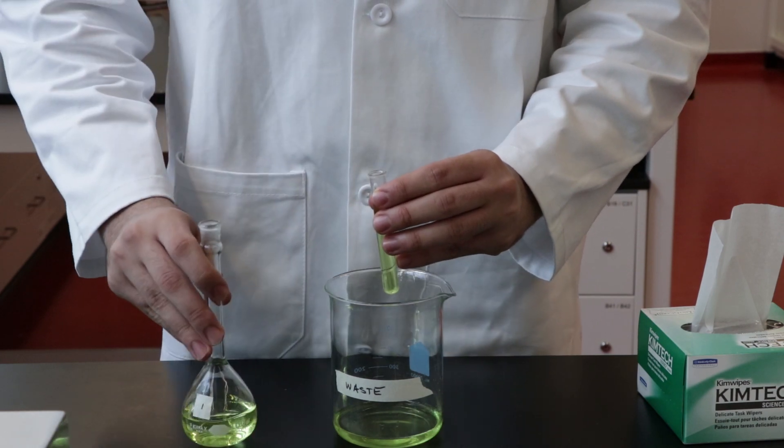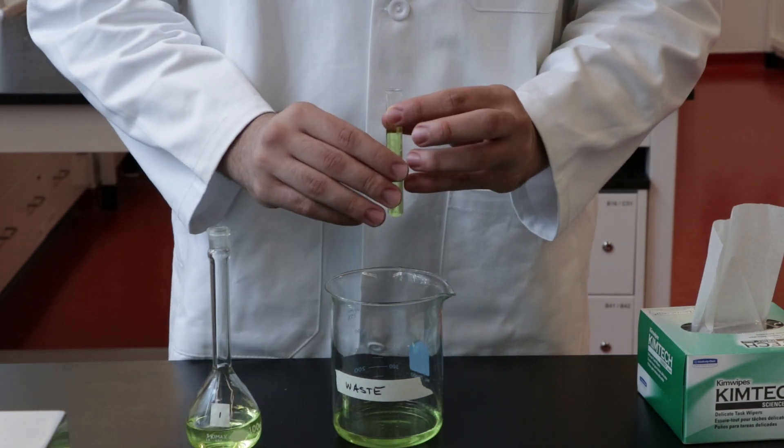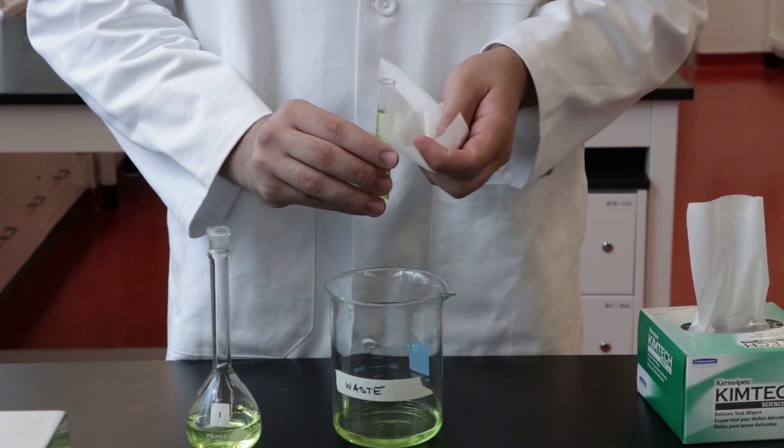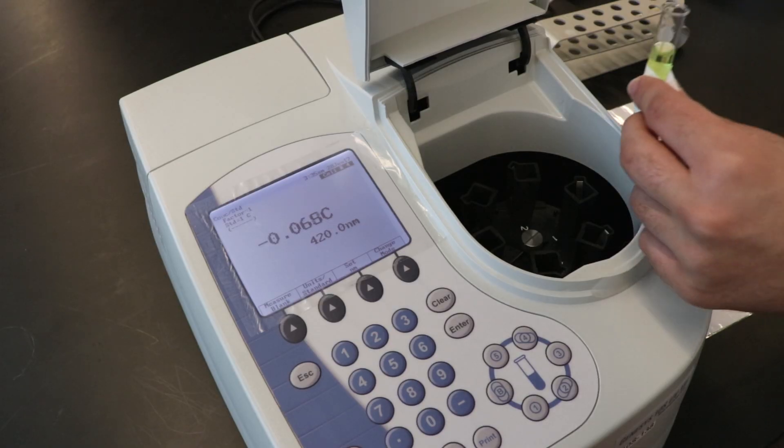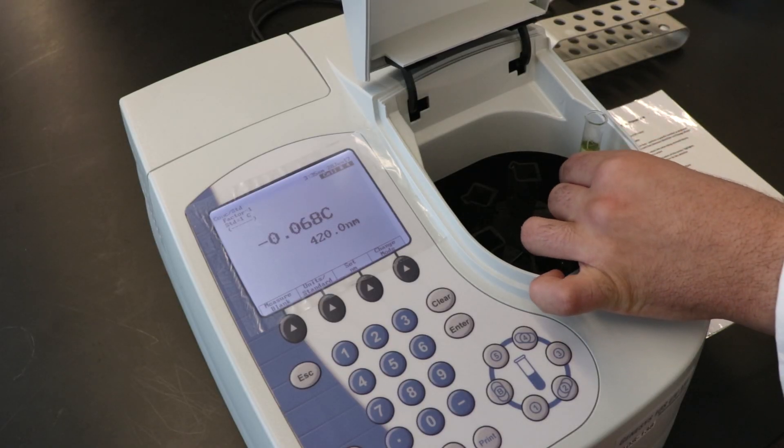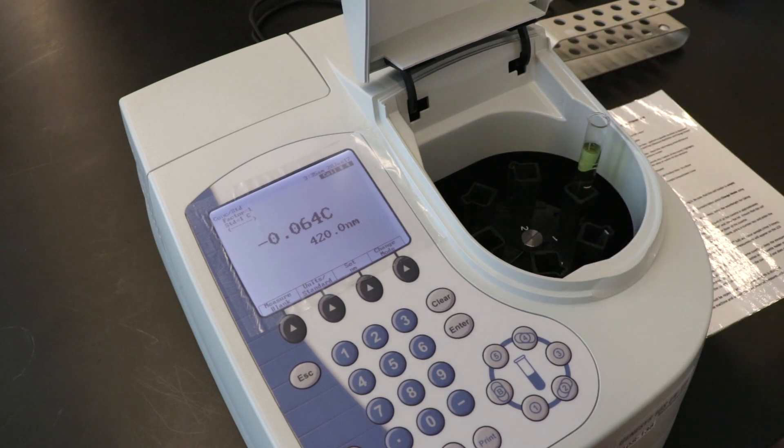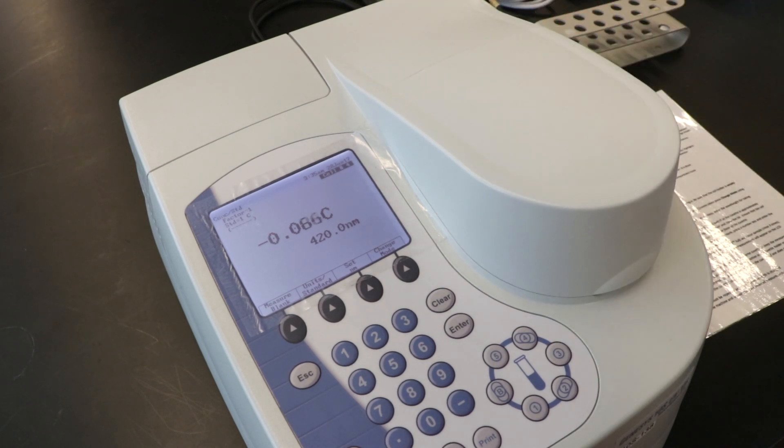Next, fill about two thirds of the cuvette with the solution from flask 1. Clean the cuvette with a Kimwipe and place it in the spectrophotometer. Press the button on the dial corresponding to the position of the cuvette.